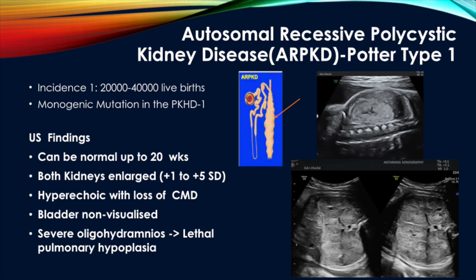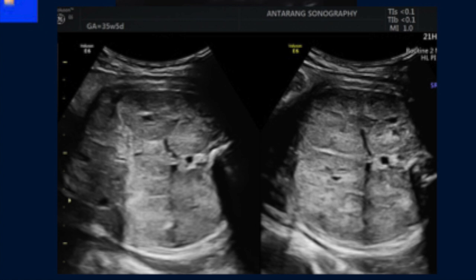Autosomal recessive polycystic kidney disease (ARPKD) is caused by monogenic mutation in the PKHD1 gene. There is fusiform cystic dilation of the collecting duct beginning in the medulla, becoming echogenic as tubular strands reach the cortex; the whole cortex becomes echogenic, the corticomedullary junction is lost, and the whole kidney looks echogenic. On ultrasound, kidneys can appear normal up to 20 weeks; later the kidney size increases up to +1 to +5 standard deviations. The kidneys are hyperechoic with loss of corticomedullary differentiation; nephrons are non-functioning, urine is not produced, the bladder is not visualized, there is severe oligohydramnios, and it is a lethal condition mainly due to pulmonary hypoplasia.